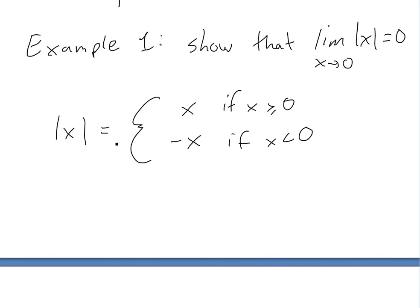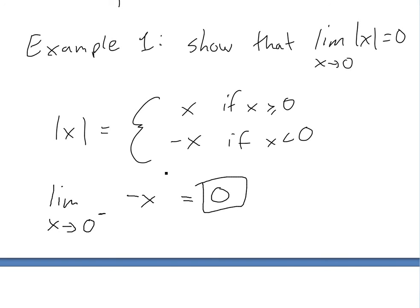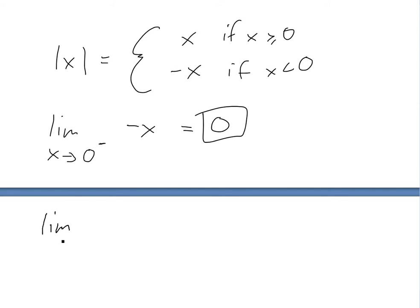We break it into those two functions. The limit as x approaches zero from the negative side uses the case where x is less than zero, so we use negative x. Plugging in zero gives negative zero, which is zero. Approaching from the right side we use x, and plugging in zero also gives zero. Both sides approach zero.